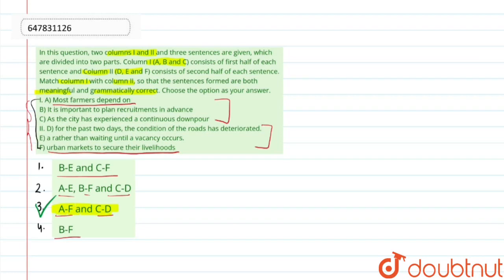और C और D statements पढ़ें हम: as the city has experienced a continuous downpour for the past two days, the condition of the roads has deteriorated. मतलब कि जो शेहर में लगातार बारिश हो रही है, उससे roads की condition खराब हो चुकी है.